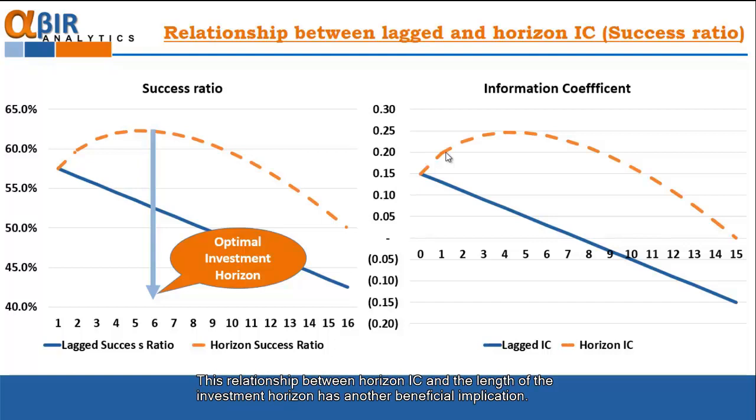This relationship between the horizon IC and the length of the investment horizon has another beneficial implication. And this is the turnover and the transaction cost because if we lengthen our investment horizon then we are minimizing our transaction cost since it is not required to trade very often.